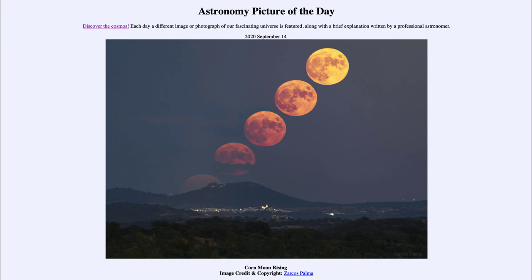This is called the corn moon, associated with the time of ripening of corn. Next month we will have the harvest moon — that is the full moon closest to the autumnal equinox — often called the harvest moon because this moon is bright and high in the sky, giving some extra light during harvest time.